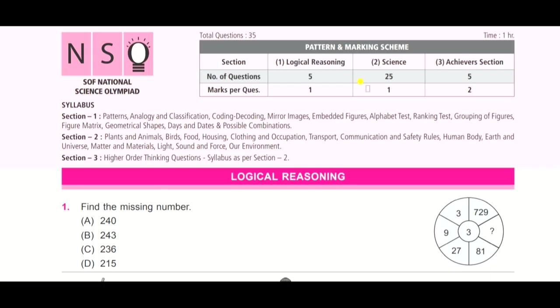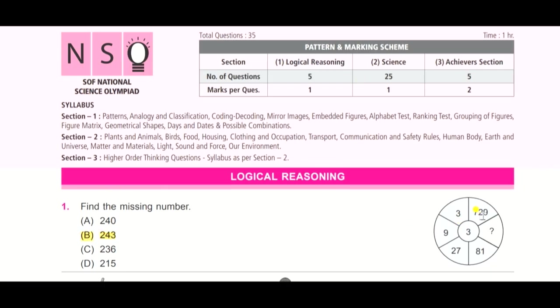And the answer is B, 243. How? You need to multiply by 3 here. 3 times 1 is 3, 3 times 3 is 9, 9 times 3 is 27, 27 times 3 is 81, 81 times 3 is 243. So the answer is B.